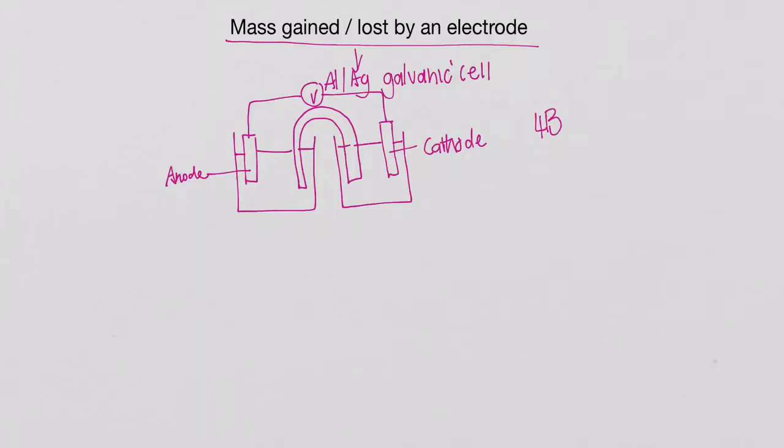So it's actually very important. We use our table 4b and by using table 4b, we'll see that the aluminium is going to be the anode and our silver is going to be the cathode.